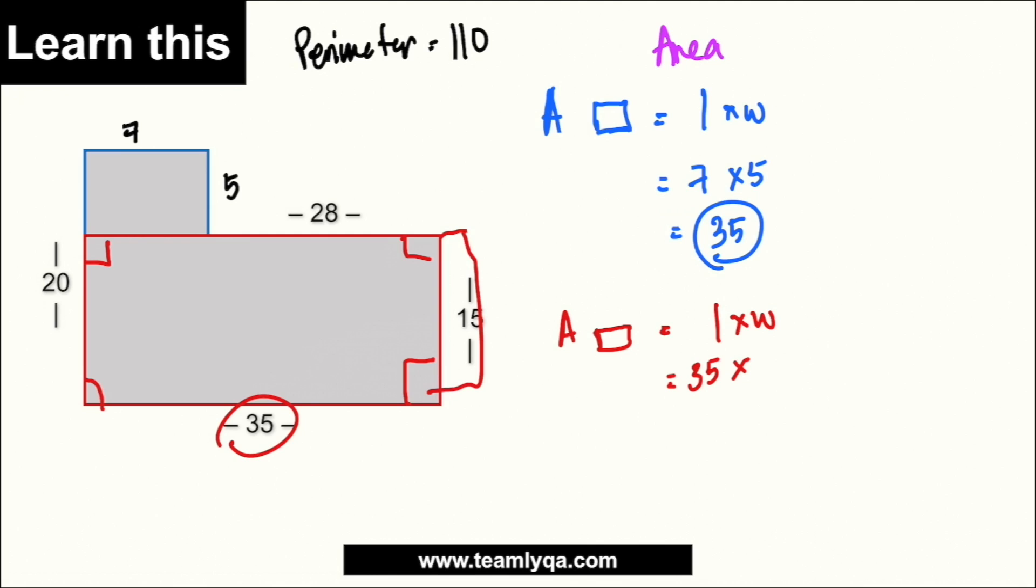Now, bakit hindi 20? Kasi yung 20, kinuha na nga, di ba, nakuha na to eh, yung part na to. Counted na yan. Hindi ko pwedeng doblehin. Pero itong part na to, hindi pa. So, ito lang yung part na yan, ang kukunin ko. Yung rectangle lang na yan. So, ito, yung isang side niya, yung width niya is just 15. So, 35 times 15.